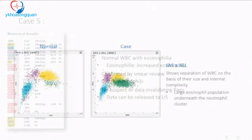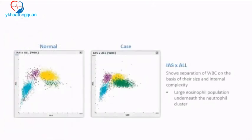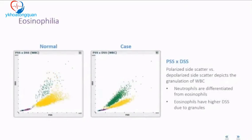Looking at the scatter plots for this case: the normal case on the left shows minimal green (eosinophils), while on the right the green population is markedly increased — a single glance prompts the technologist to alert the pathologist. The PSS plot further shows clear segregation of the yellow neutrophil population and the green eosinophil population. The scatter plots and differential parameters provide significant information to lab personnel.